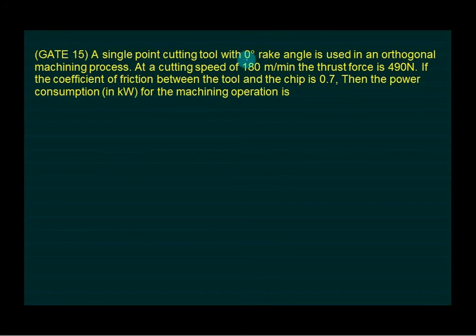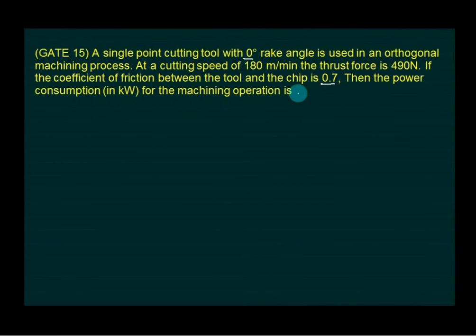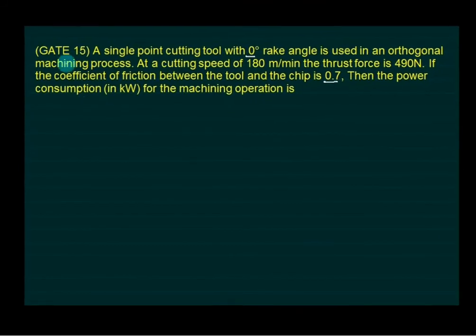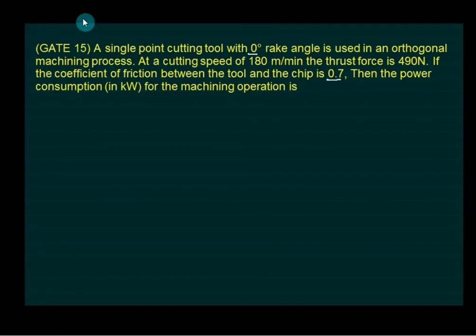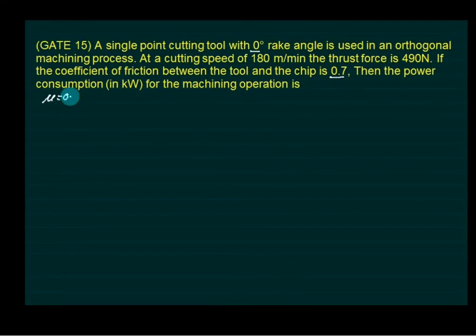A single point cutting tool with 0 degree rake angle, so gamma equals 0, is used in an orthogonal machine. The cutting speed is 120 m/min, the thrust force is 490 N, and mu equals 0.7, which means tan(beta) equals 0.7. We want to calculate the power consumption.